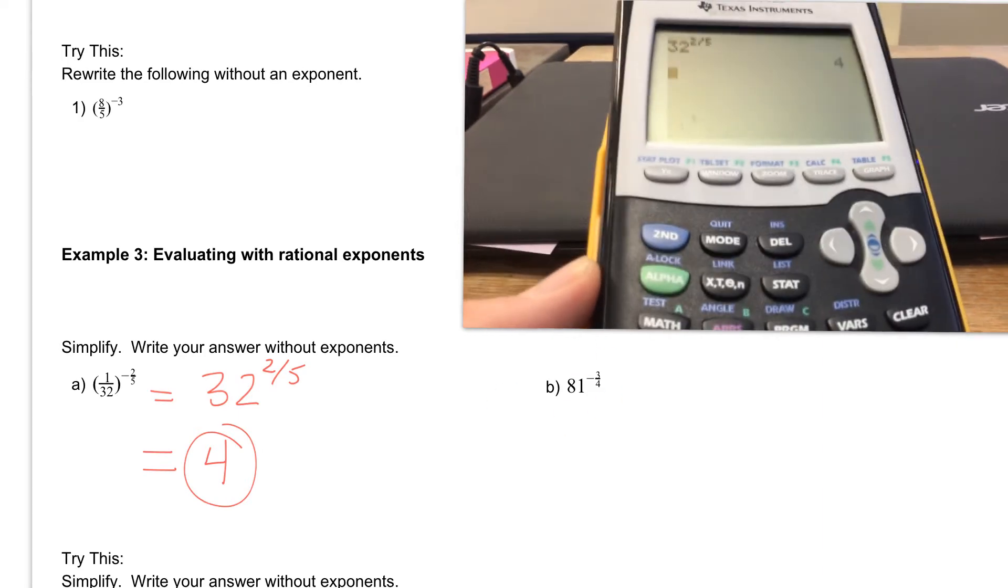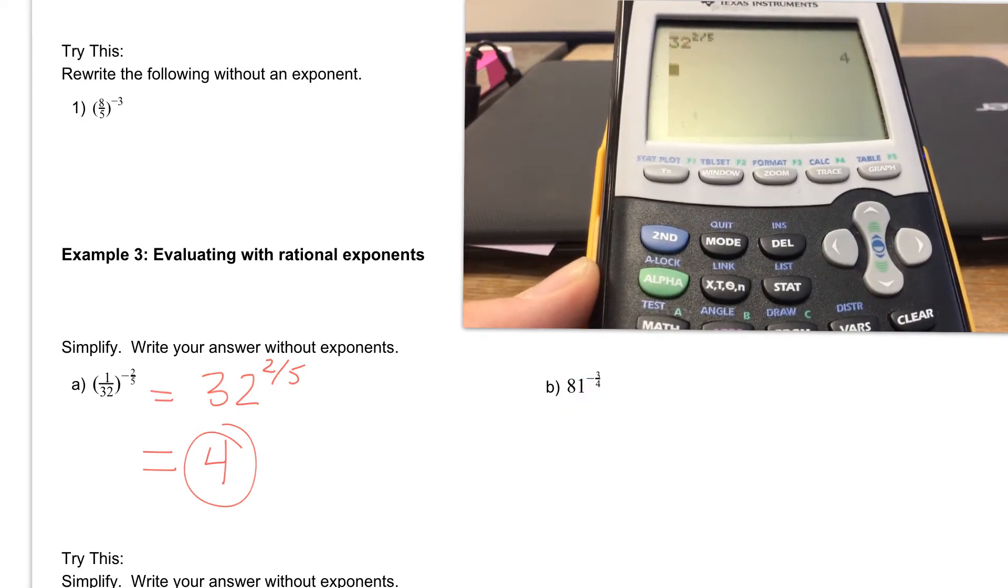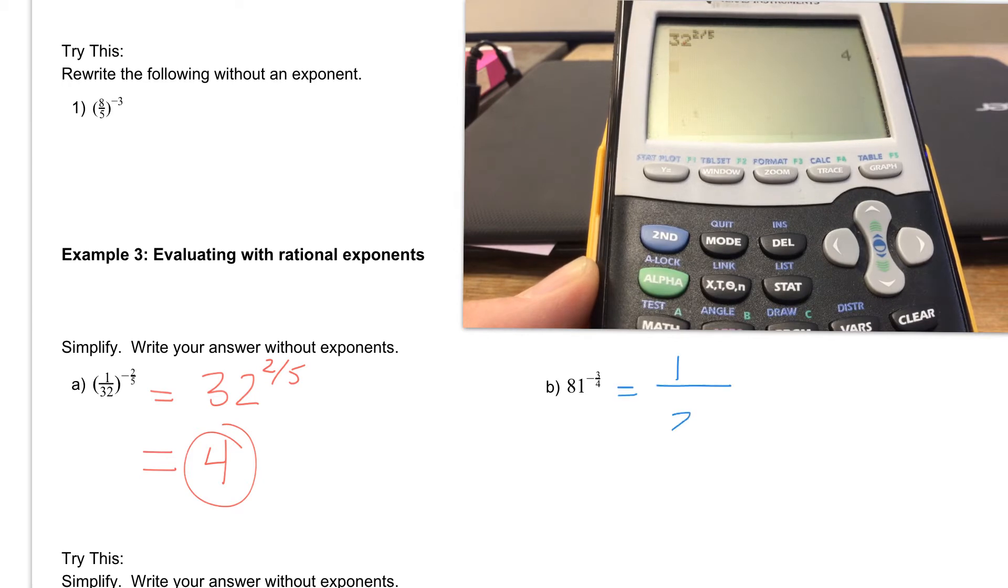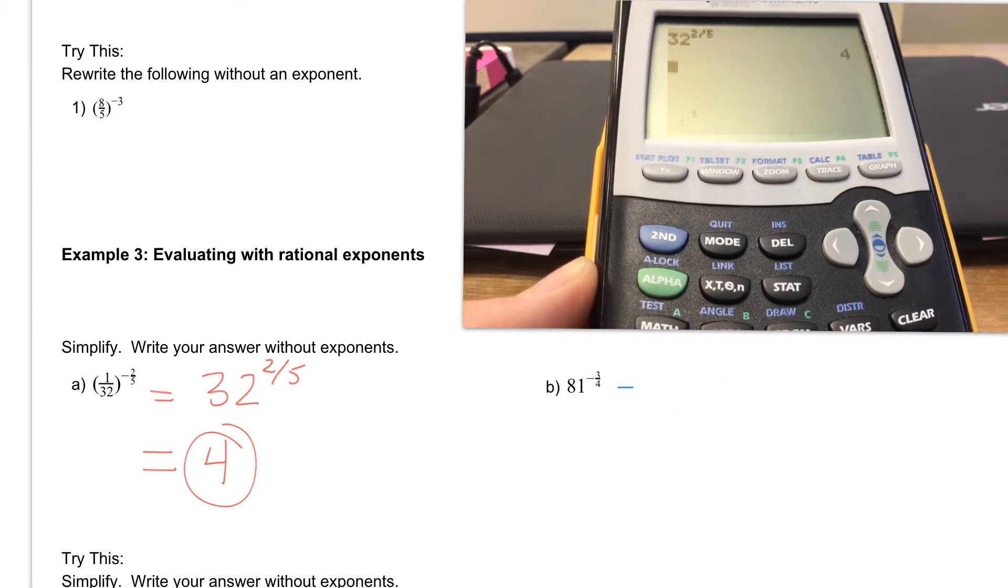Then let's take a look at letter B. We have 81 raised to the negative 3 fourths. We want to make that exponent positive if we can. So we're going to change this. Remember that 81 goes to the bottom to become positive. So we get 81 to the positive 3 fourths.